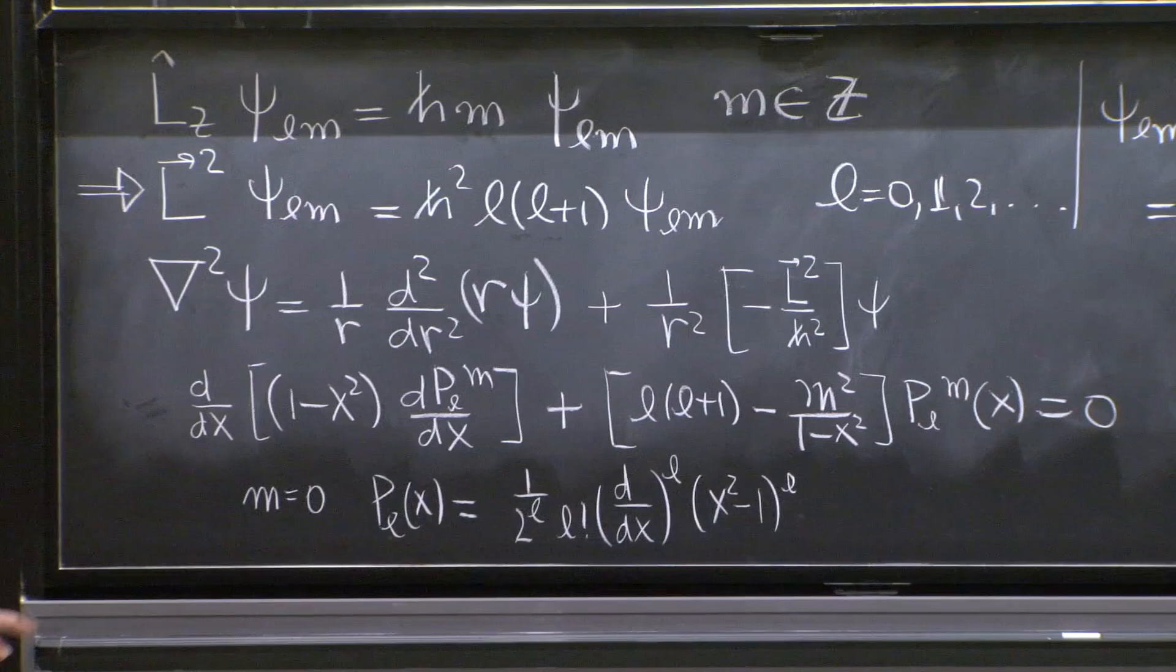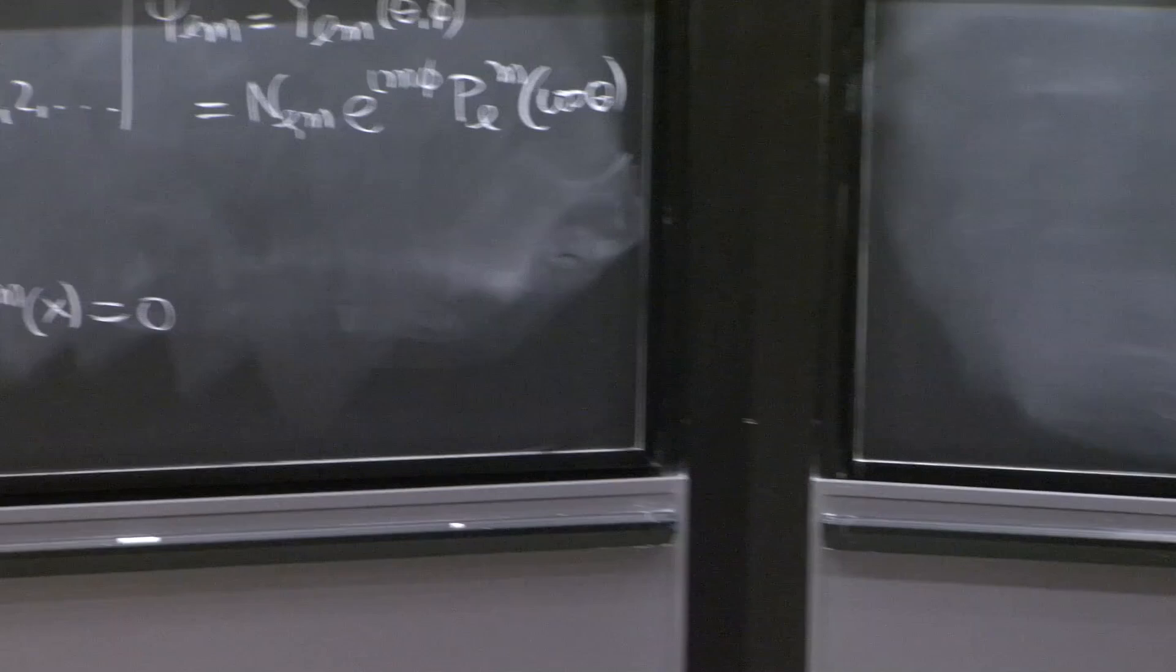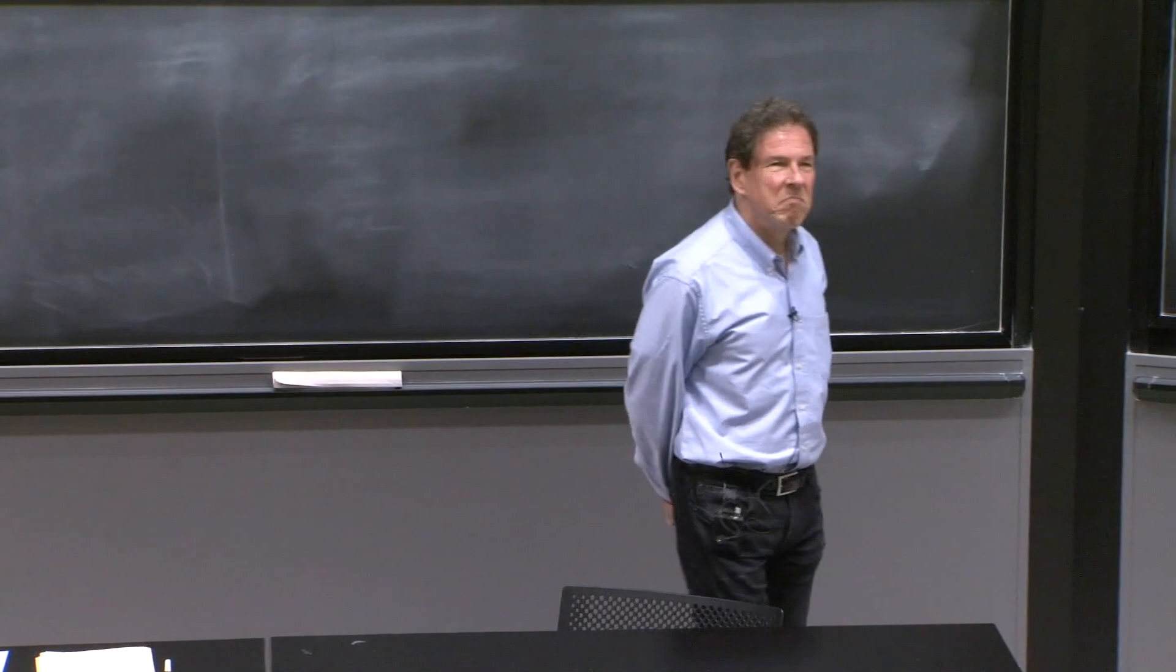And that gave for us the quantization of L. And that's where we stop. These are the Legendre polynomials. Solve this equation for M equals 0. Are there any questions? Anything about these definitions?